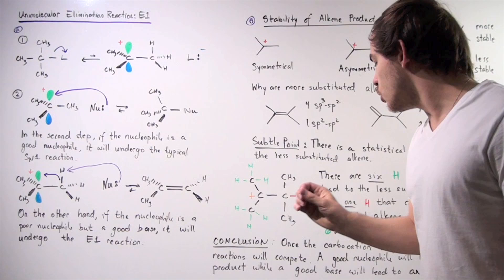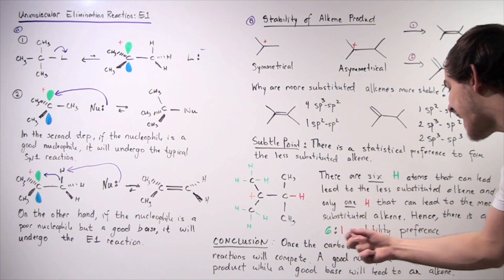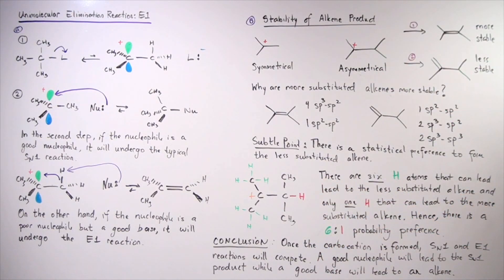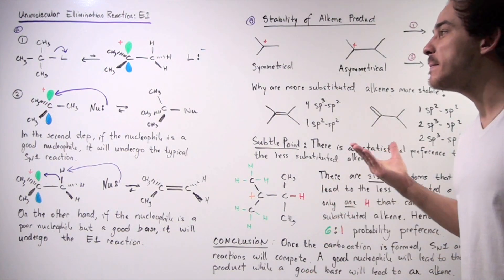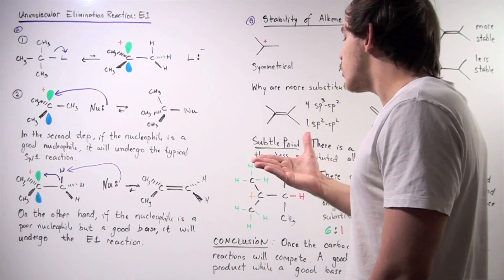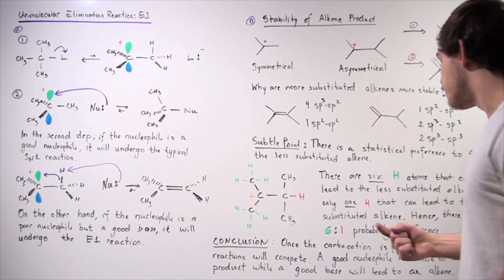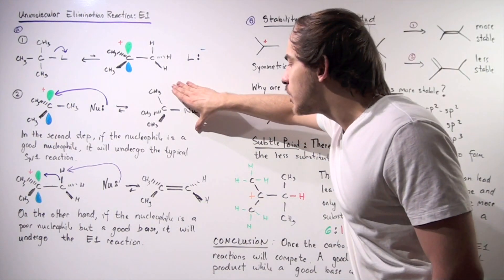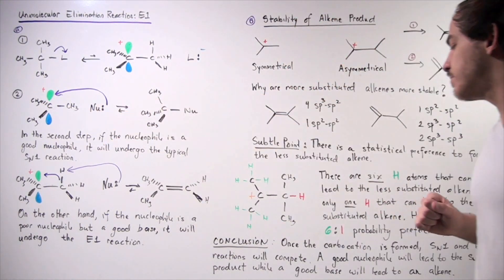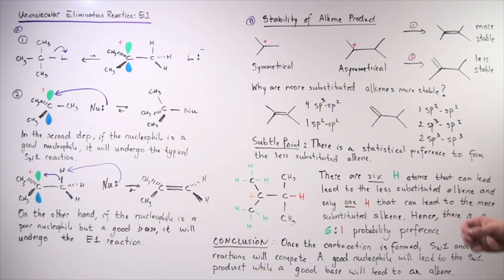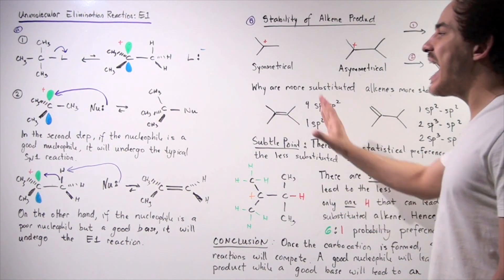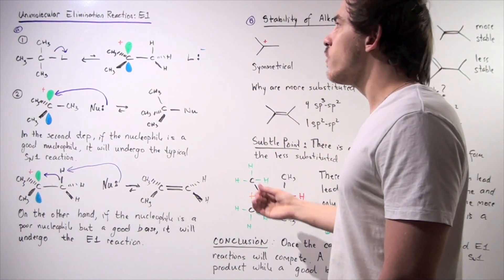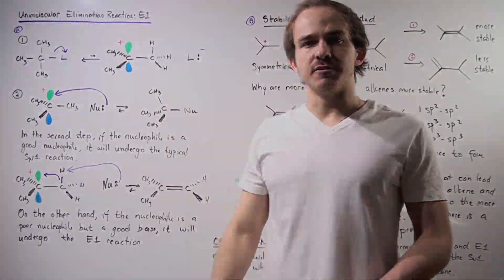In conclusion: once the carbocation is formed, SN1 and E1 reactions will compete with one another. A good nucleophile will lead to the SN1 product, while a good base that is a poor nucleophile will lead to the alkene product through the E1 elimination reaction.